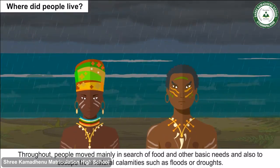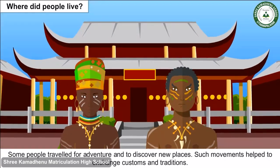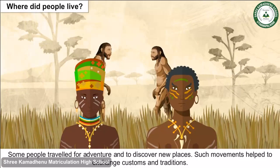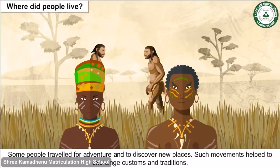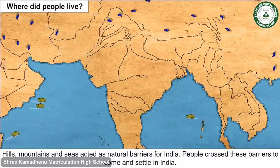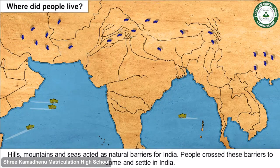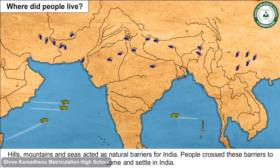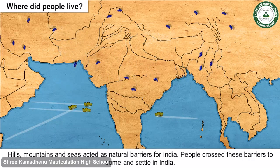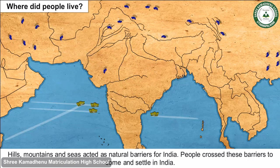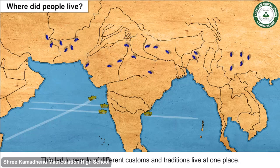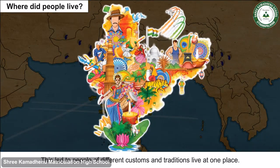Some people traveled for adventure and to discover new places, and such movements helped to exchange customs and traditions. Hills, mountains and seas acted as natural barriers for India. People crossed these barriers to come and settle in India, which led to people of different customs and traditions living at one place.